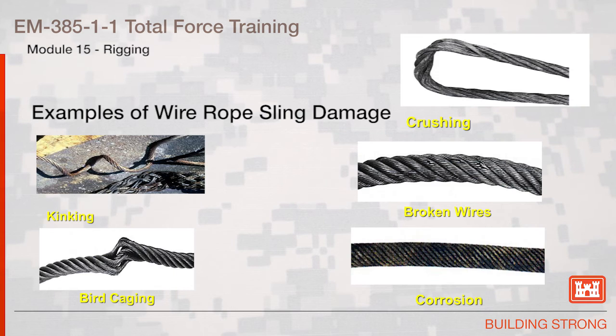This slide illustrates examples of wire rope sling damage: kinking, birdcaging, crushing, broken wires in the strands, and corrosion.